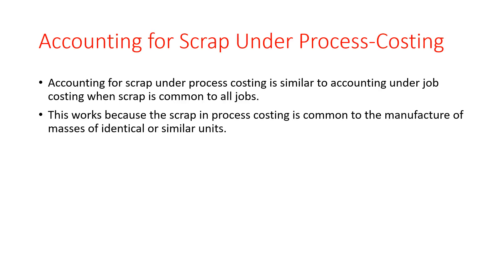Accounting for scrap under process costing is similar to accounting under job costing when scrap is common to all jobs. This works because scrap in process costing is common to the manufacture of masses of identical or similar units. This is the end of chapter 18.